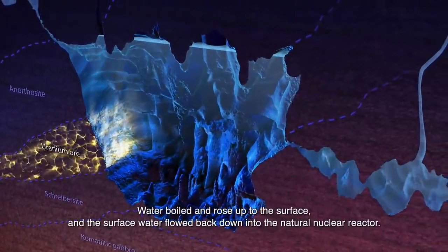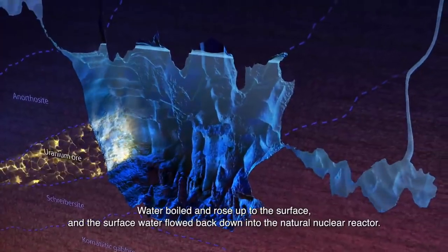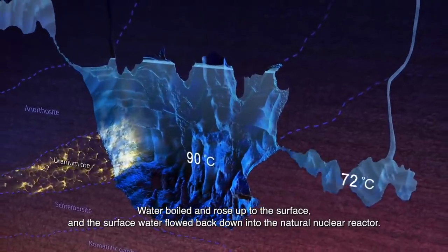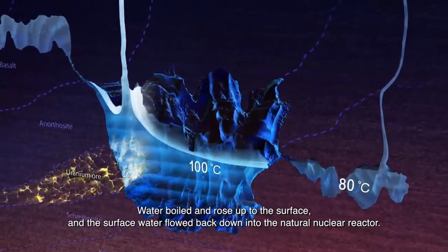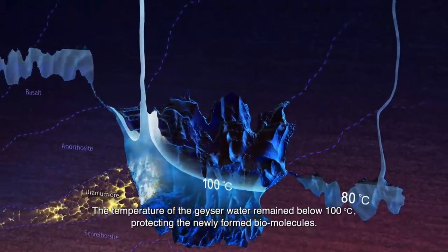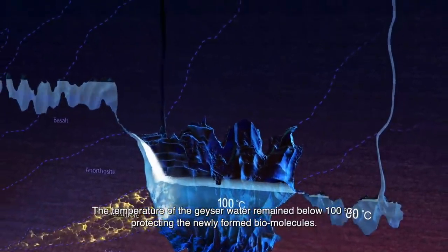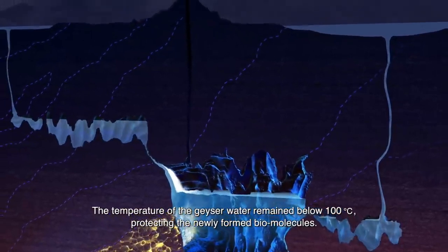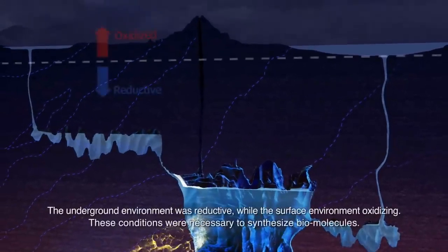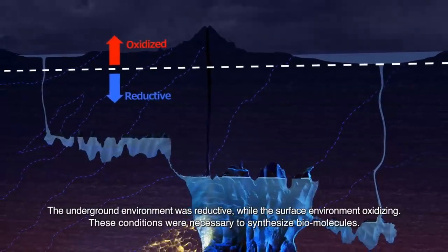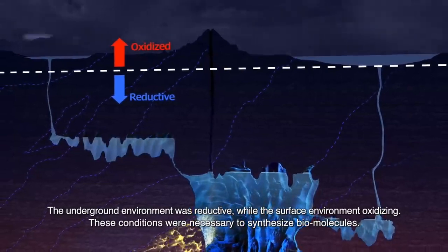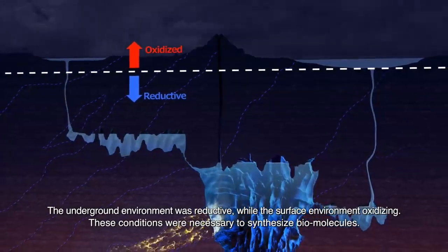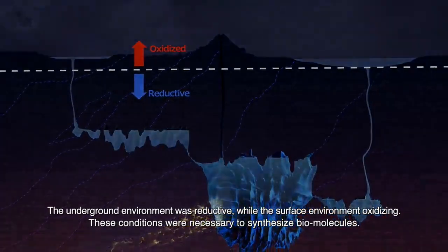Water boiled and rose up to the surface, and the surface water flowed back down into the natural nuclear reactor. The temperature of the geyser water remained below 100 degrees, protecting the newly formed biomolecules. The underground environment was reductive while the surface environment was oxidizing — these conditions were necessary to synthesize biomolecules.